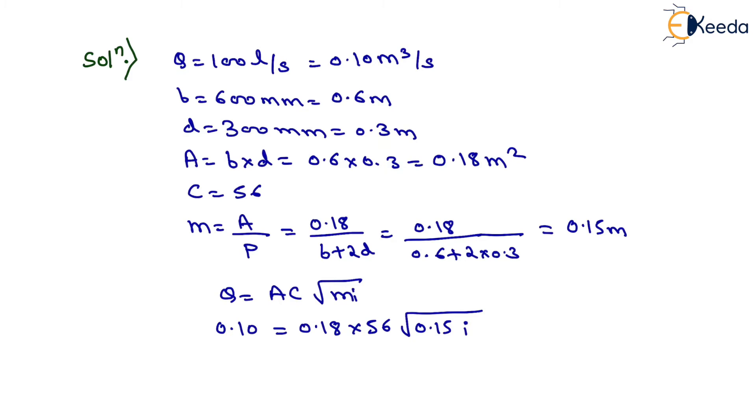we get I equals 1 by 1524. That is the slope of the bed, which equals 1 by 1524.